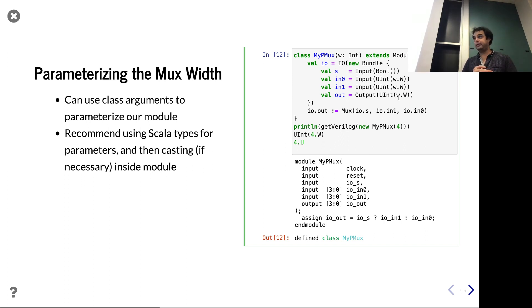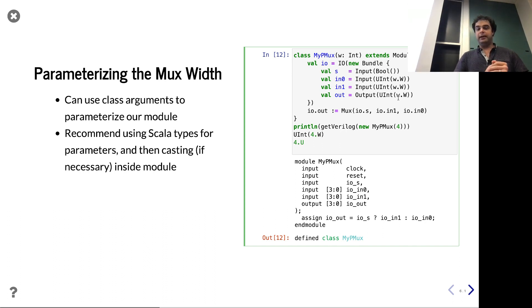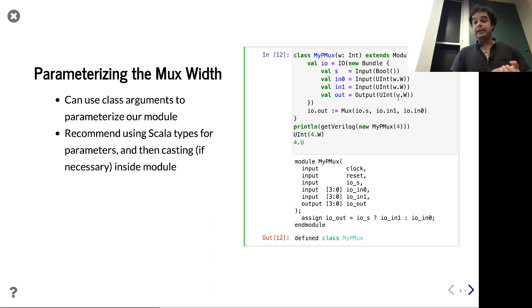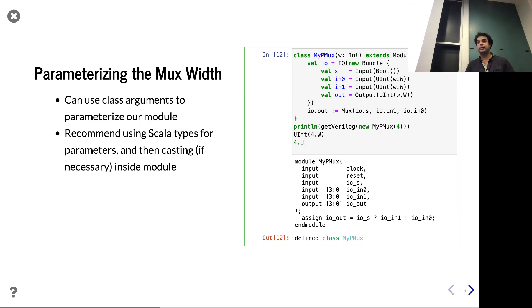The question was about 'u' being for unsigned — yes, it's for unsigned. There is a signed integer type, SInt, which we'll actually see in a couple slides.